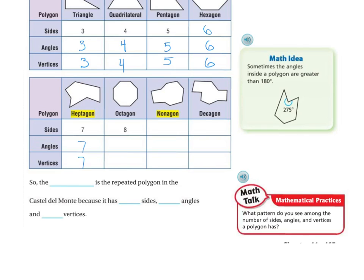Let's look at our octagon. Sides: one, two, three, four, five, six, seven, eight. Let's look at our angles: one, two, three, four, five, six, seven, eight. And let's look at our vertices: one, two, three, four, five, six, seven, eight.